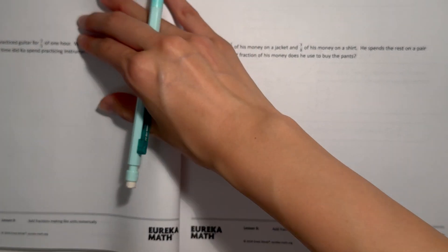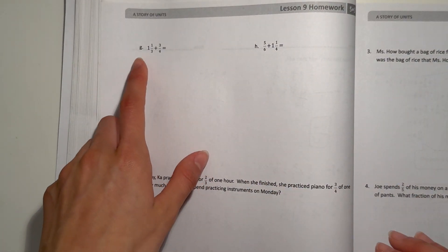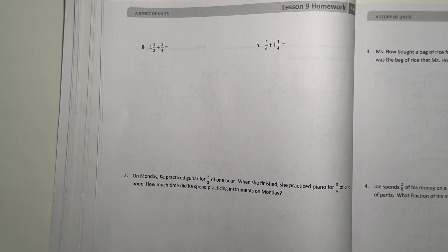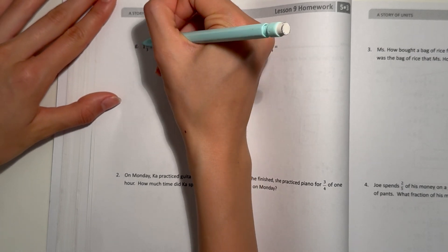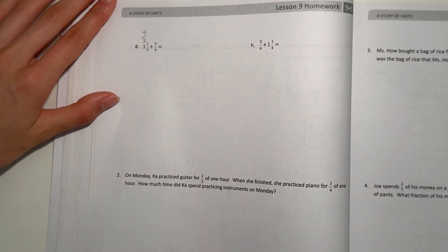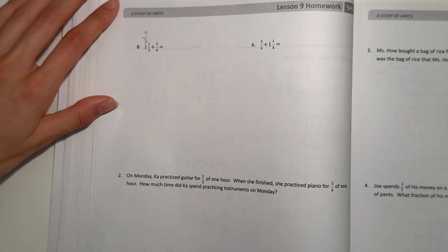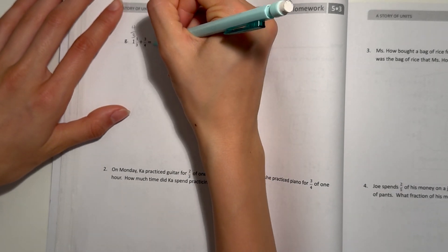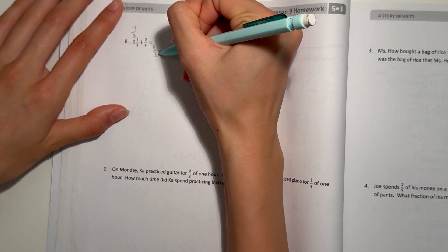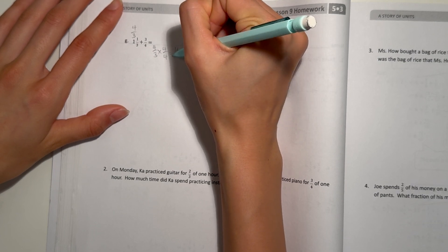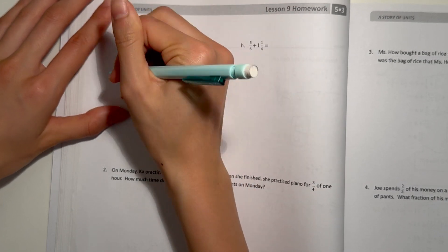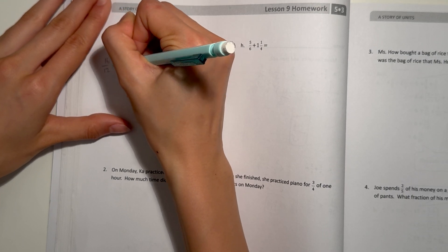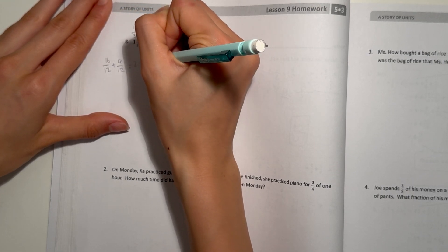Next page, part g: one and one third plus three fourths. I find it easier to write it as an improper fraction. One and one third — one whole is three thirds, plus one third, so it's four thirds. Four thirds plus three fourths: three and four, we know the least common denominator is twelve. Four thirds times four equals sixteen over twelve, and three fourths times three equals nine over twelve. Sixteen over twelve plus nine over twelve equals twenty-five over twelve.